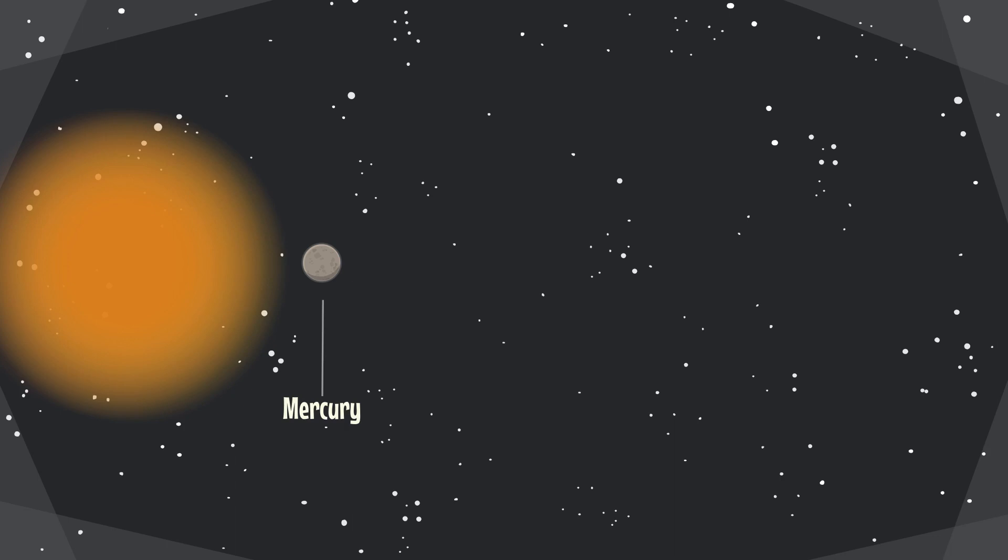The second planet from the Sun is Venus. It's covered in a thick layer of clouds and it's the hottest planet in our solar system. Venus is the closest planet to Earth, but it's still 91 million kilometers away.